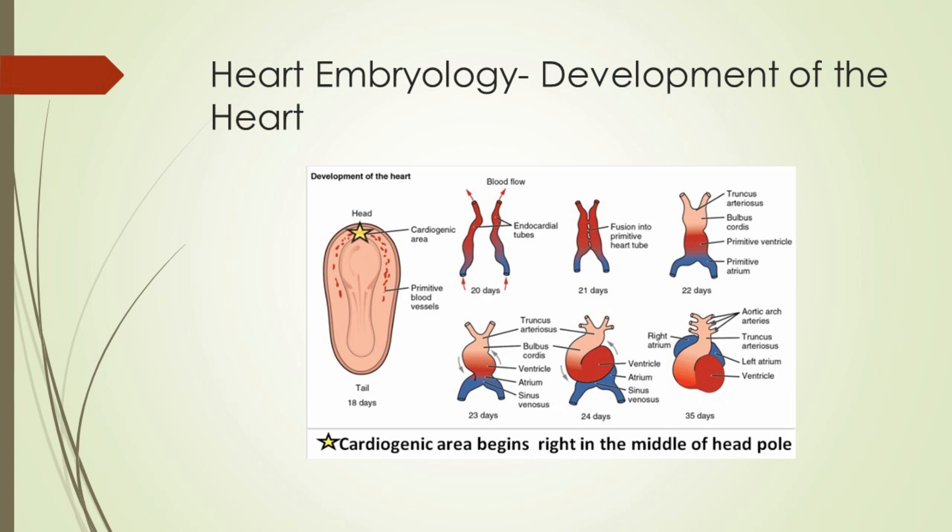Heart embryology — development of the heart. The heart is a muscular organ located in the middle mediastinum that pumps blood through the circulatory system. It is one of the earliest differentiating and functioning organs in the human body. In human embryos, the heart begins to beat at about 22–23 days, with blood flow beginning in the fourth week.